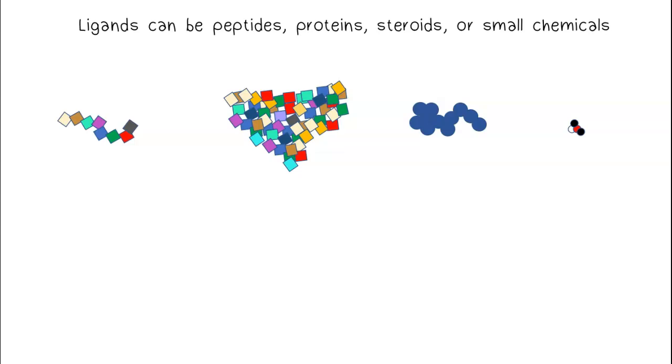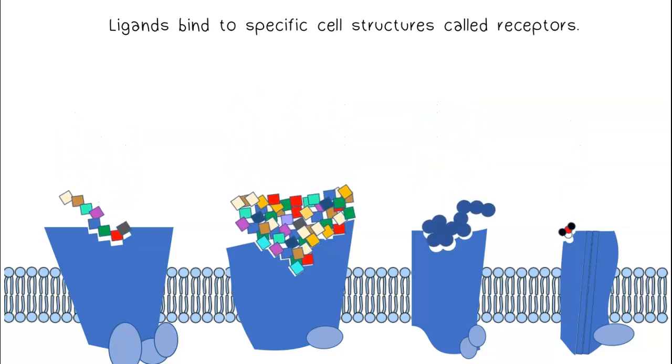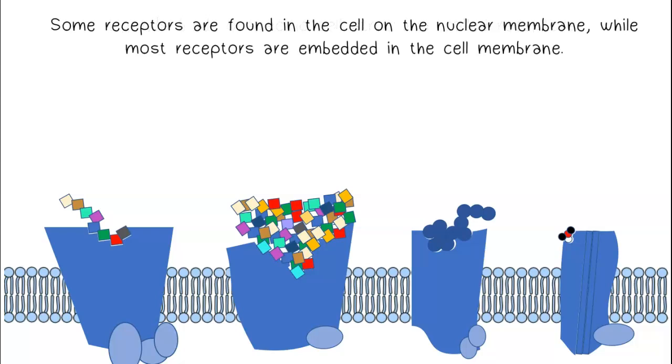Ligands can be peptides, proteins, steroids, or small chemicals. Ligands bind to specific cell structures called receptors. Some receptors are found in the cell on the nuclear membrane, while most receptors are embedded in the cell membrane.